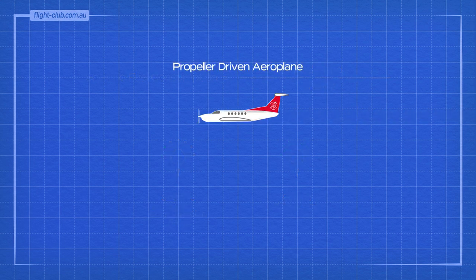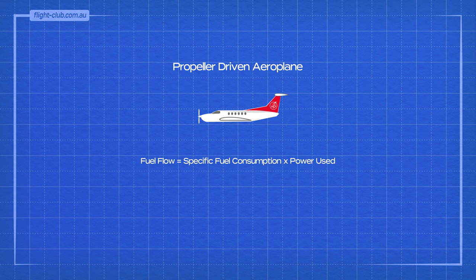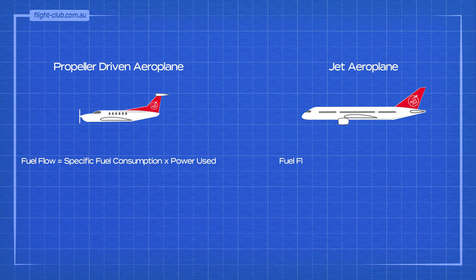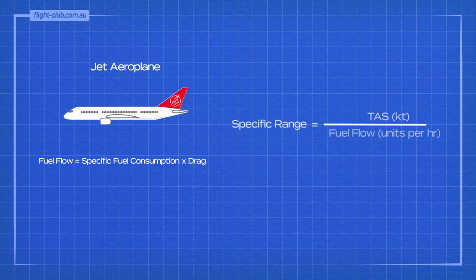For a propeller-driven aeroplane, fuel flow is equal to specific fuel consumption multiplied by power used. For a piston engine aeroplane, this occurs at lower altitude where the power required matches full throttle height, and for a turboprop aeroplane at medium altitude where the true airspeed is higher and the propeller is still relatively efficient. For a jet, fuel flow is equal to specific fuel consumption multiplied by drag.